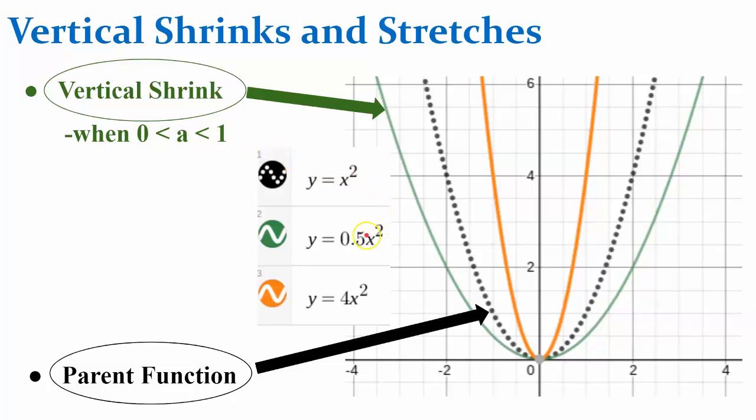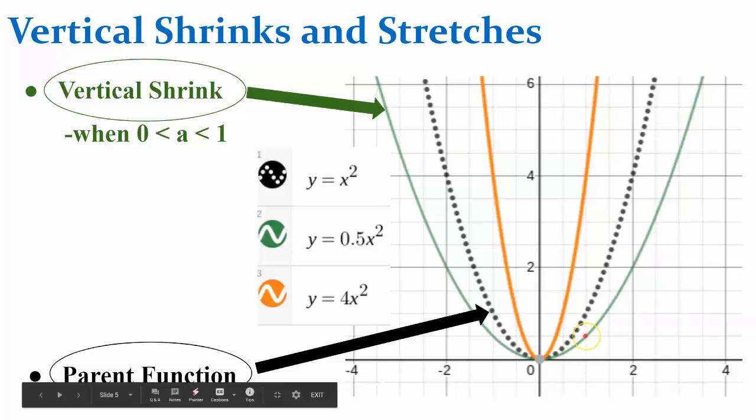All the outputs are decreased by a factor of 1 half. So let's examine that. We have the point 1, 1 on our parent function. If we multiply the output 1 by 1 half, we get 1, 1 half as an ordered pair. 1, 1 half.